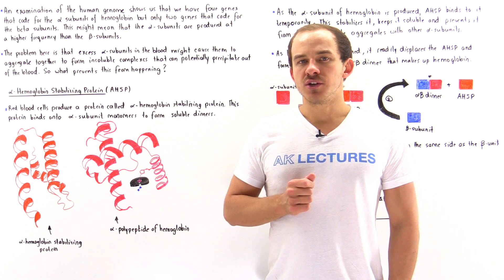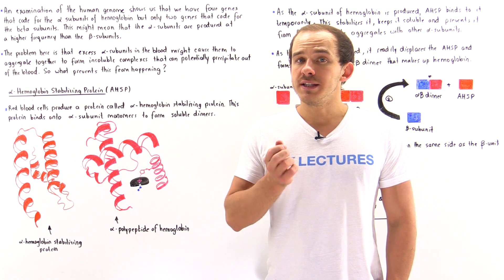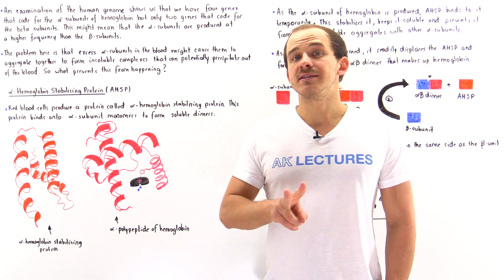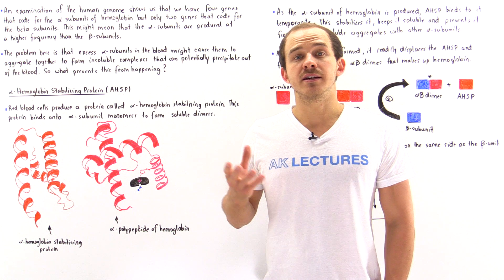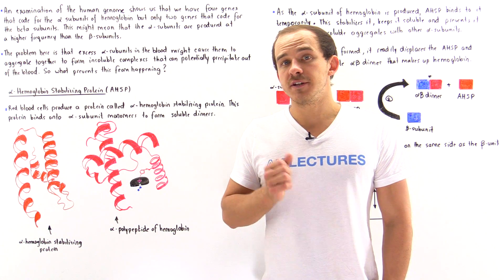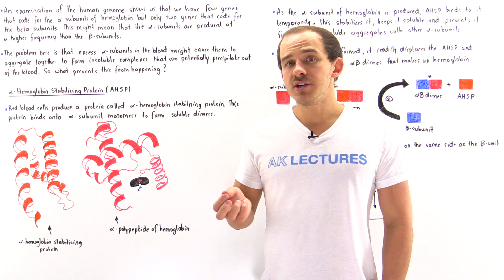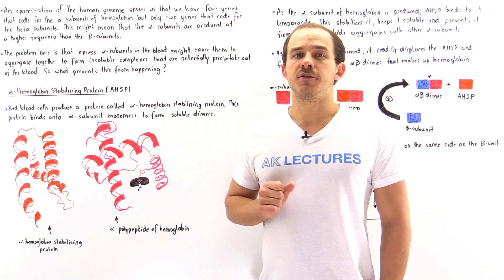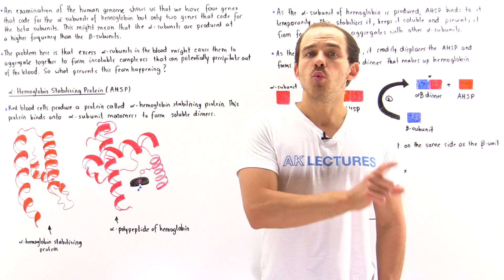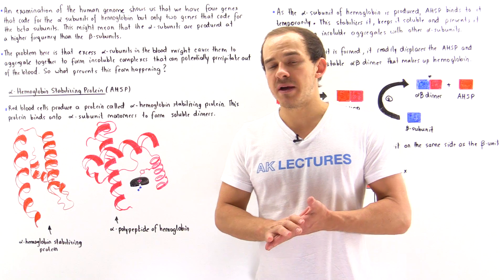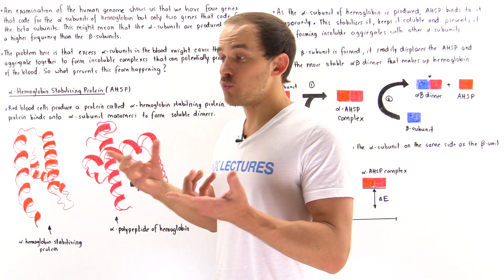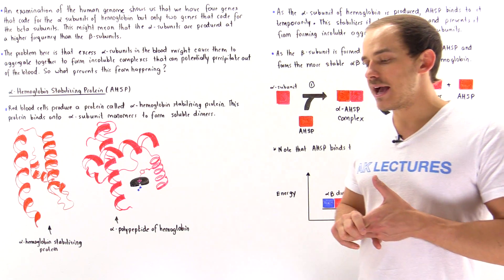Inside any hemoglobin molecule, we'll always find four individual polypeptide chains. Two of these chains are identical alpha units, and the other two chains are identical beta units. This means in any given hemoglobin molecule, we'll always find a ratio of one alpha unit to one beta unit — one alpha polypeptide always combines with one beta polypeptide to form that hemoglobin molecule, in which we have two alpha-beta dimers.